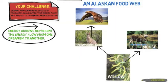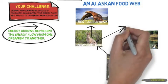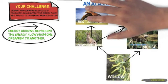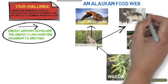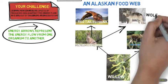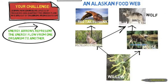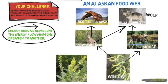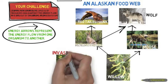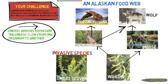The snowshoe hare is a herbivore and is prey to the red-tailed hawk, which is a carnivore. It is also prey to the wolf, another carnivore. The moose, also a herbivore, is prey to the wolf as well. Now in Alaska there is an invasive species called sweet clover — it came from Europe and it disrupts this food web.